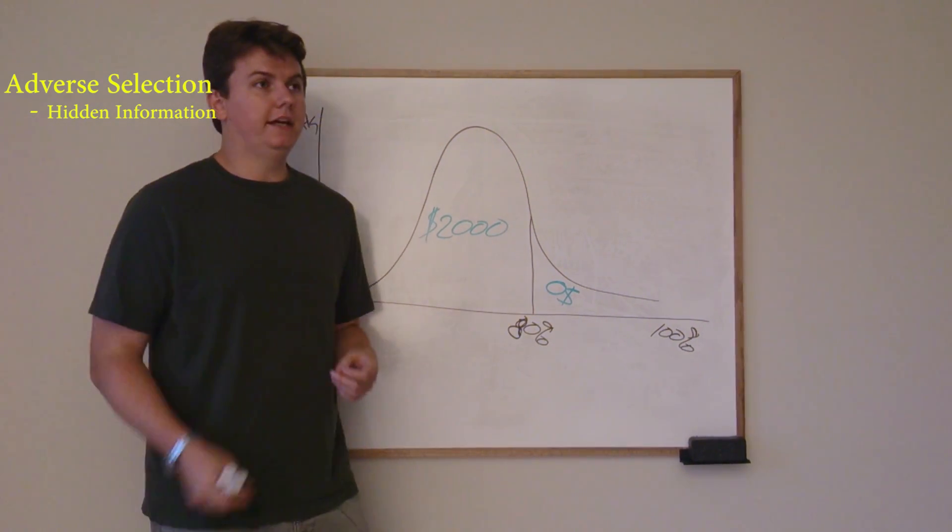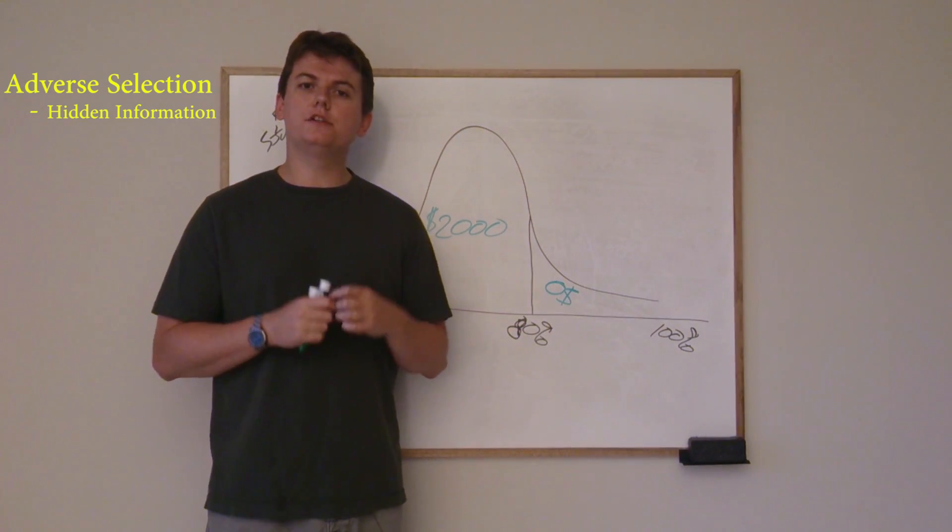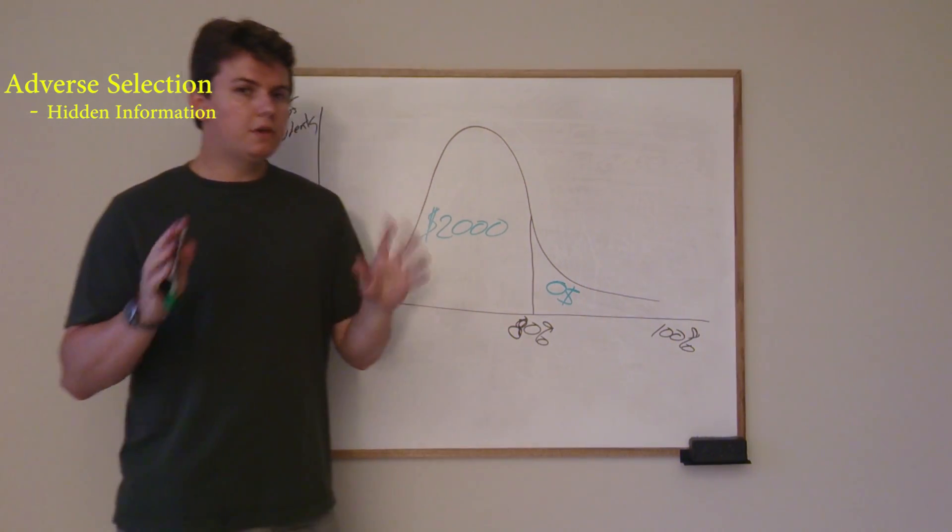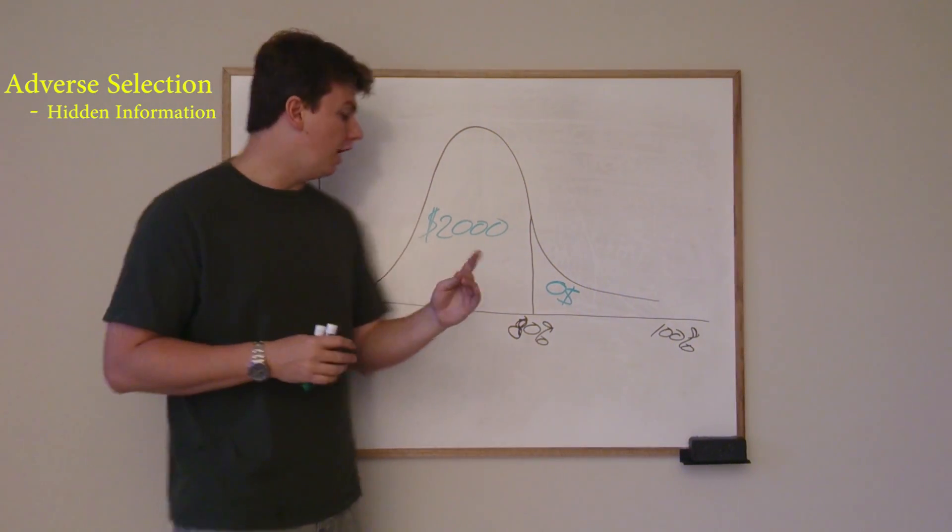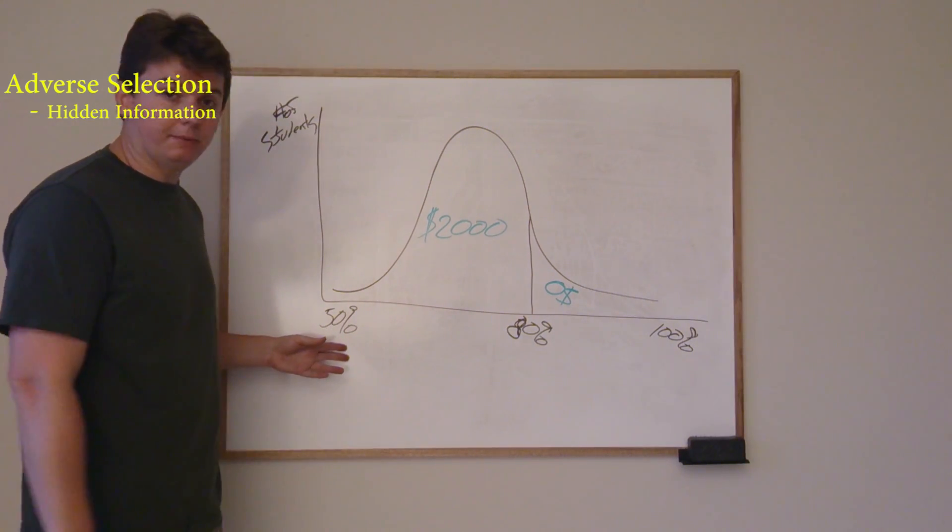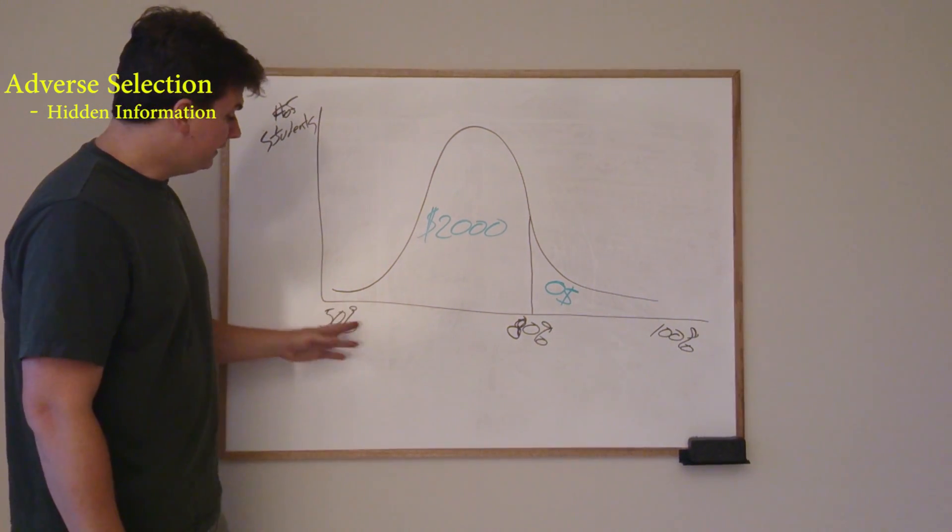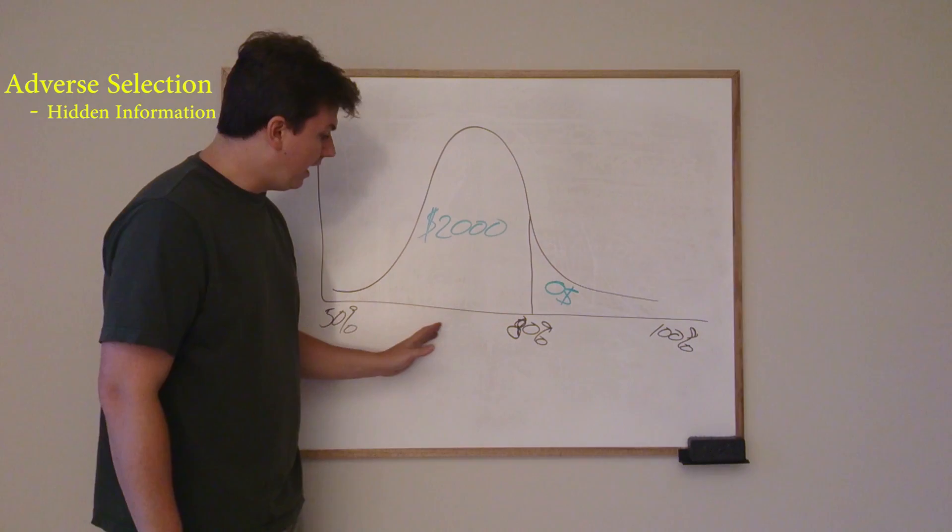So if I offer this insurance, I say, I'll give you $2,000 if you're going to be less than 80. Who are the first people that are going to be in line to buy it? Obviously, it's going to be these people down here. And then these people are going to, you know, these people will buy.